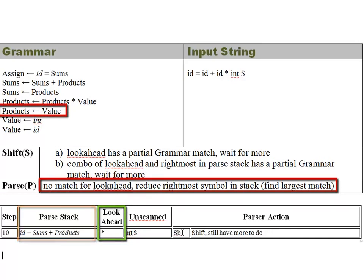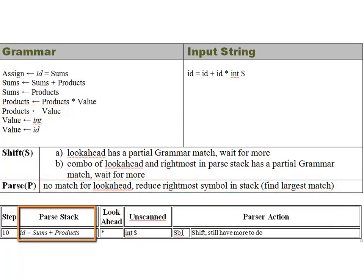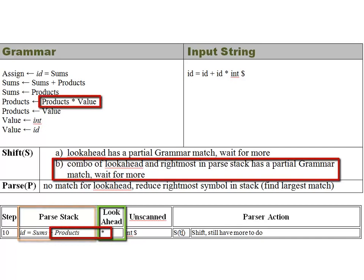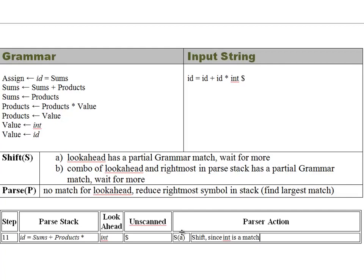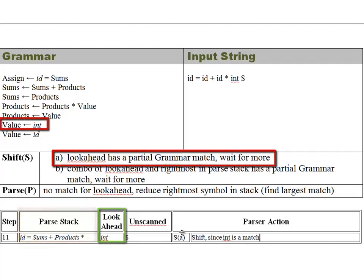After another reduction, we have ID equals sums plus products in the parse stack. Looking at the look-ahead, which is the multiplication sign, this time we do have a partial match with the look-ahead and the rightmost side of the parse stack. Products followed by multiplication matches line four of the grammar — products times value — so we shift to see if we can match that production before doing any reduction. In step eleven, with sums plus products and the multiplication symbol in the parse stack, our look-ahead is an int, which has a partial match — shift condition A — so we wait for more.